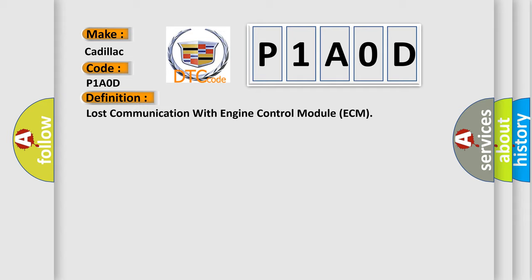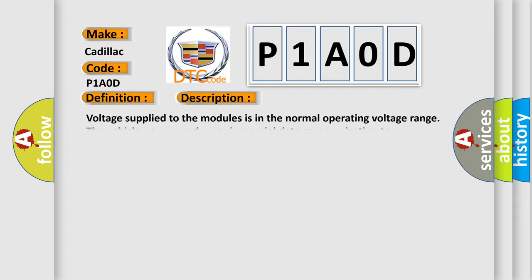The basic definition is Lost Communication with Engine Control Module (ECM). And now this is a short description of this DTC code: Voltage supplied to the modules is in the normal operating voltage range. The vehicle power mode requires serial data communication to occur.